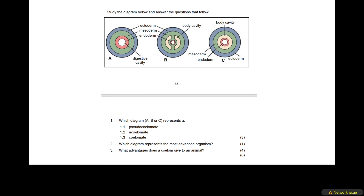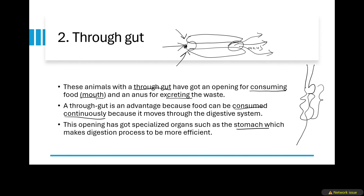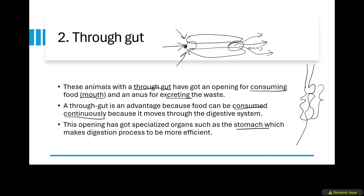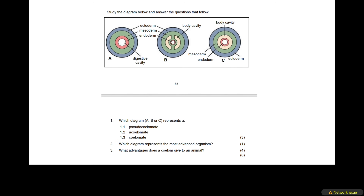So I hope you understand those two characteristics. Remember that we were discussing the last two characteristics — the number of gut openings, which is the number of openings into the digestive system, as well as the presence of a body cavity. I hope that you understand this video. Please comment if you've got any questions, and I've got an activity for you — just comment your answers. Don't forget to subscribe to the channel and tell your friends to stay tuned.